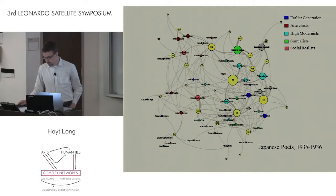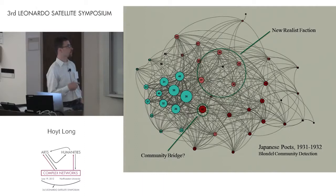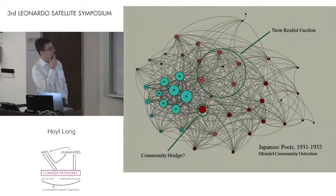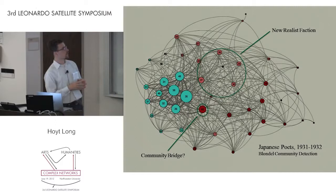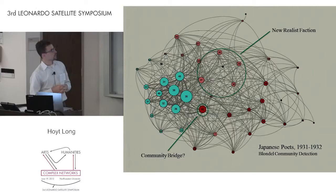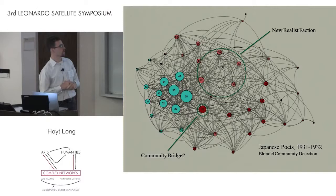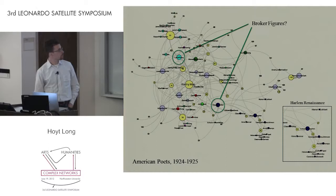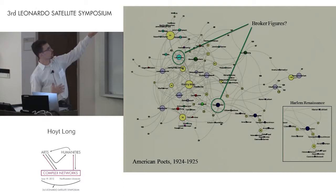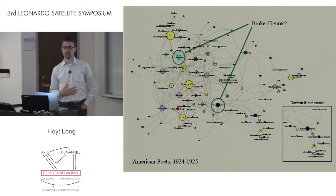Of course, using the features of the network, we can also automate the process and let the algorithm detect communities for us. For a projection of the data—just the authors seen through their connections through journals—community detection is picking up things we know about the period, such as that these four poets broke off from the poets on the left in the blue. It's raising certain other questions about why certain figures were placed in particular groups. Another thing we're interested in are figures who seem to span certain structural holes. In the American poets' case, some clear instances are Laura Riding and County Colon, who are lesser known and yet seem to have a very important place in the network structure as bridges between cliques.